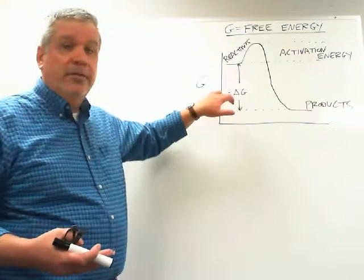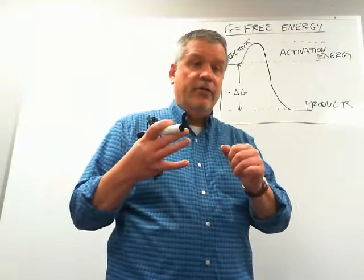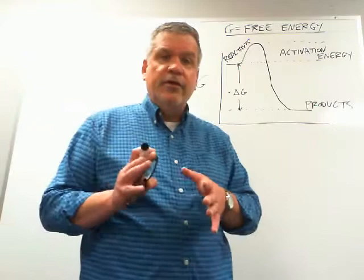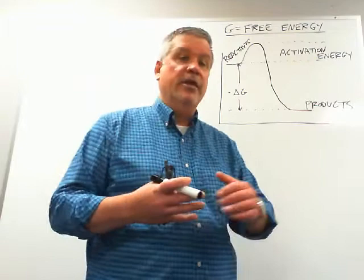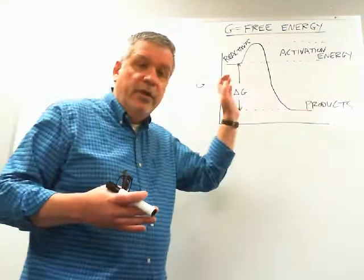Exergonic reaction — exergonic means we get energy out. In most cases, exergonic reactions are going to tend to happen spontaneously. However, there's still an energy barrier that we have to overcome before that reaction can proceed spontaneously. That energy barrier, right here on the graph, is called activation energy. So even though this is an exergonic reaction that should happen spontaneously, we need to overcome this activation energy in order for this reaction to proceed on its own.